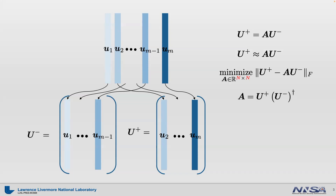We have a problem here. Unfortunately, the size of the matrix A can be pretty huge depending on the size of each image data n. It depends on the application, but n can be a large number such as a million, billion, or even trillion. Furthermore, it is dense. Believe me, you do not want to deal with a large-scale dense matrix. Therefore, DMD reduces the dimension of the operator A.